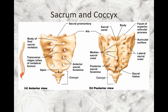The sacrum is a composite bone formed from the fusion of five vertebrae. Superiorly it articulates with L5. The median sacral crest is the remnant of the spinal processes of the fused vertebrae. The alae are the wing-like fusions of the transverse processes that articulate with the hip bones. The multiple sacral foramina allow for the passage of blood vessels and nerves. Finally, the coccyx is a vestigial tail attached to the sacrum by ligaments.